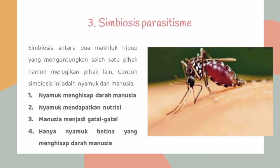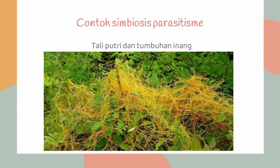Simbiosis parasitisme adalah simbiosis antara dua makhluk hidup yang menguntungkan salah satu pihak namun merugikan pihak lain. Contoh simbiosis ini adalah nyamuk dan manusia. Nyamuk menghisap darah manusia, nyamuk mendapatkan nutrisi namun manusia menjadi gatal-gatal. Hanya nyamuk betina yang dapat menghisap darah manusia. Contoh simbiosis parasitisme lainnya yaitu tali putri dan tumbuhan inang.